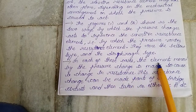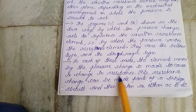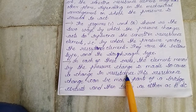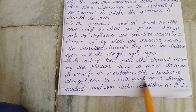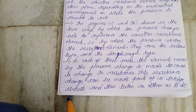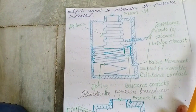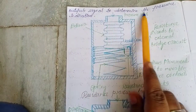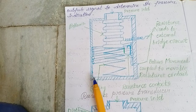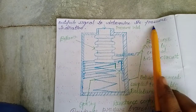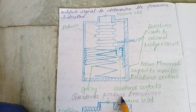In each of these cases, the element moved by the pressure change causes a change in the resistance of the sensitive element. This resistance change can be made part of a bridge circuit, and then taken as either an AC or DC output signal to determine the pressure indication. Whatever resistance change has occurred, it is connected to a bridge circuit to determine the pressure.